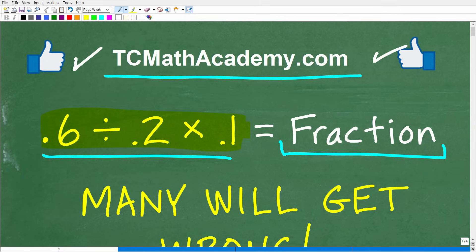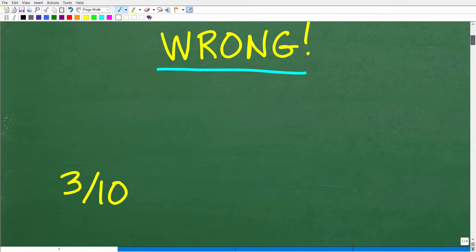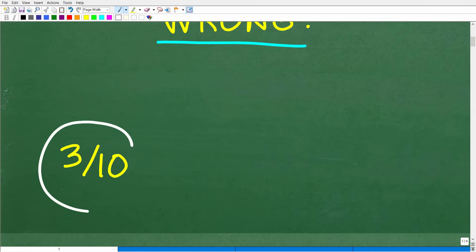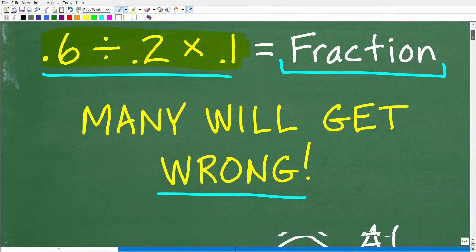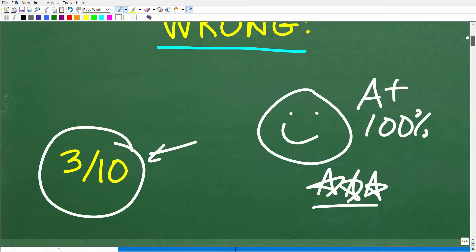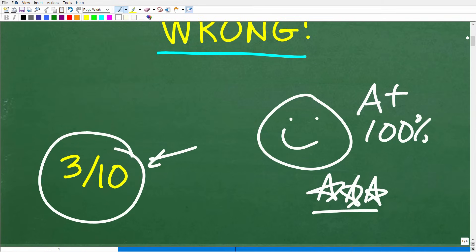So 0.6 divided by 0.2 times 0.1, what is that answer expressed as a fraction? Well, the correct answer is 3 tenths. How did you do? If you got this right, let's celebrate by giving you a nice happy face and A+, 100%, and multiple stars. So you can brag to your friends and family that you remember your primary school arithmetic. And they'll be like, yeah, good for you, I'm going back to Netflix. When they want to do math, they'll just use a calculator.